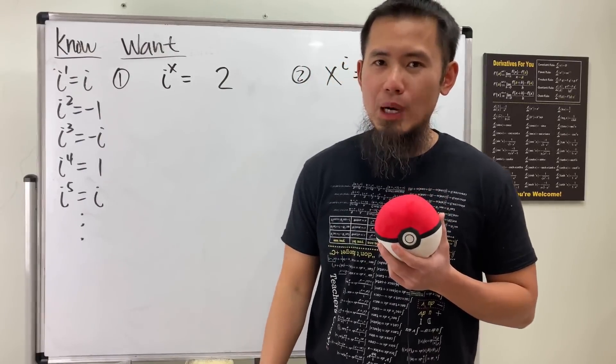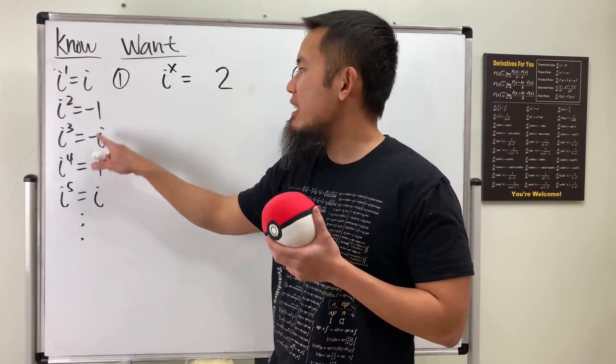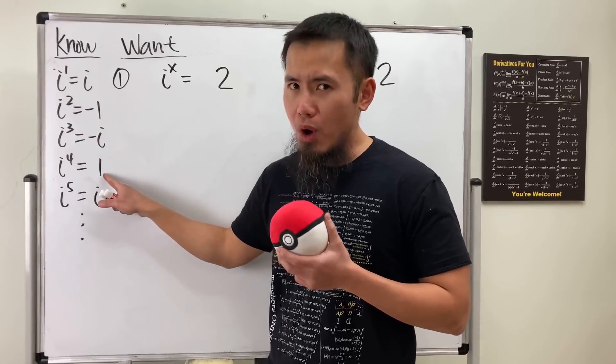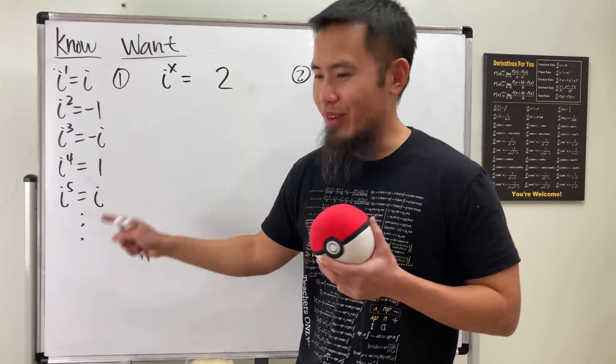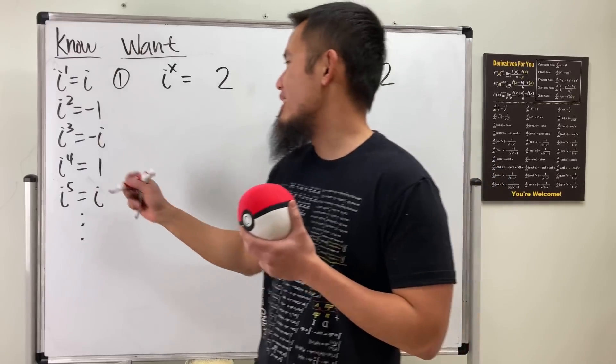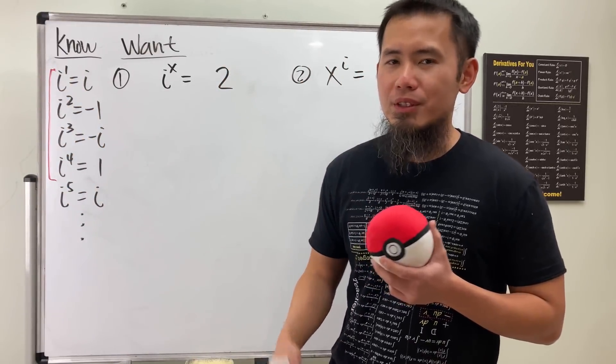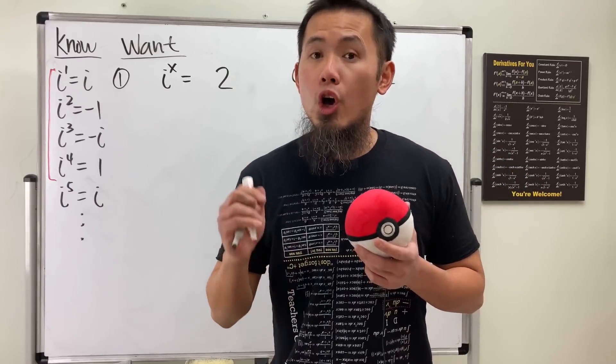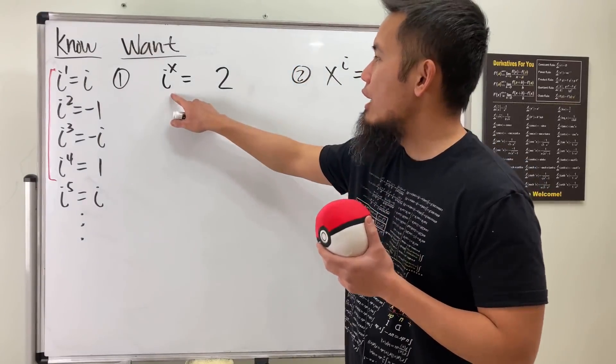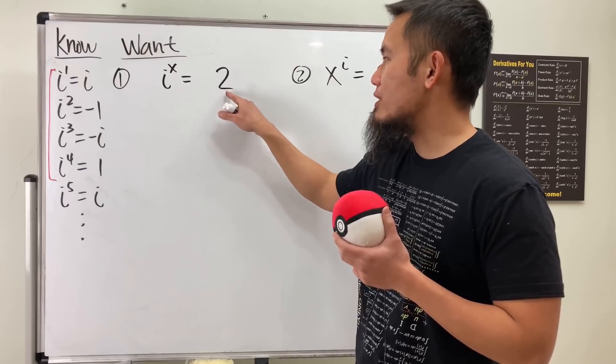As we all know, when we take a look at the powers of i, we will just get i, negative 1, negative i, 1, and i, and so on. As you can see, it's just going to be a repeat of all this 4 right here.